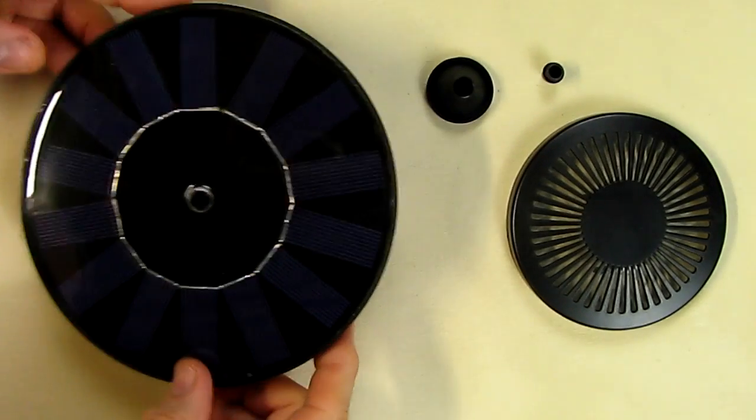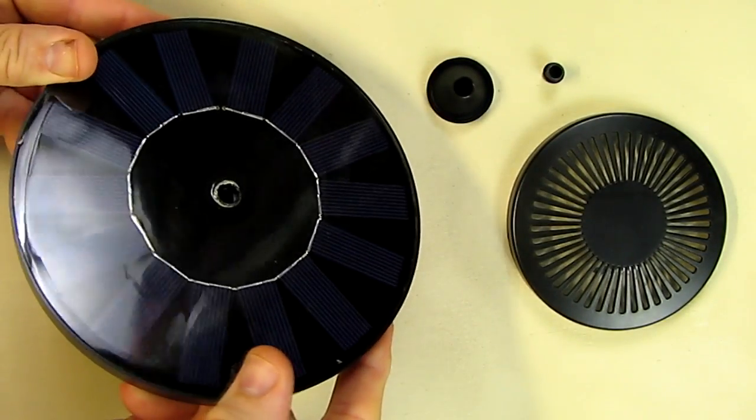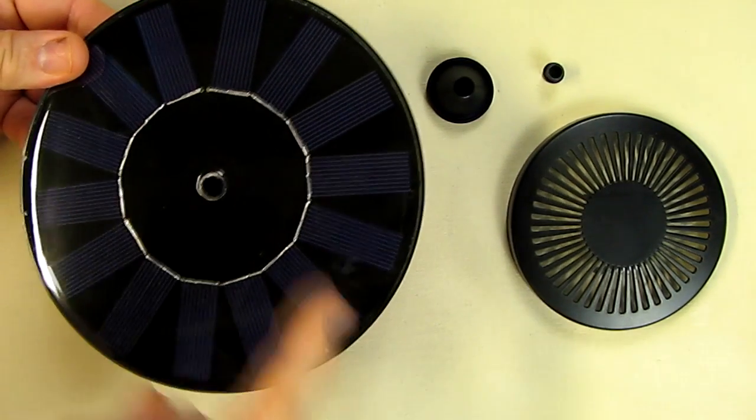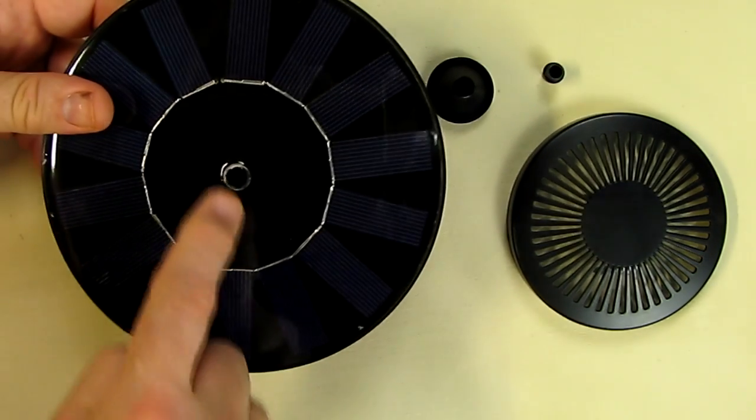So here's what it comes with. You've got the solar panel array, and if the camera could pick that up—it's hard to see, but you've got multiple solar panels connected in parallel, looks like. And then it has the center hole for the pump.